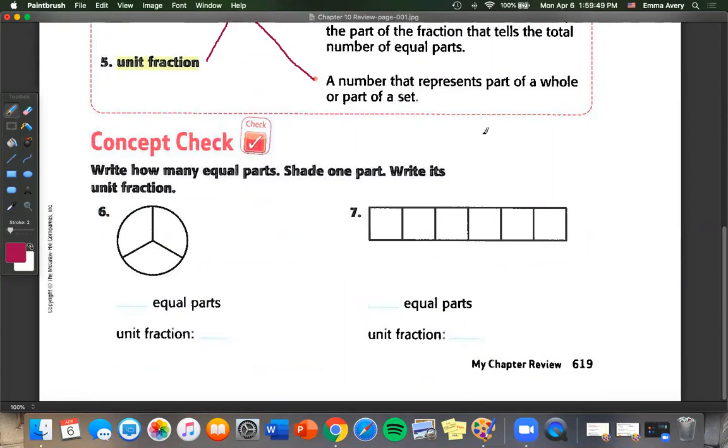So number six, write how many equal parts, shade in one part, and write its unit fraction. So how many equal parts do we have here? We've got one, two, three equal parts. We shade in one of those. Our unit fraction is going to be one over three.